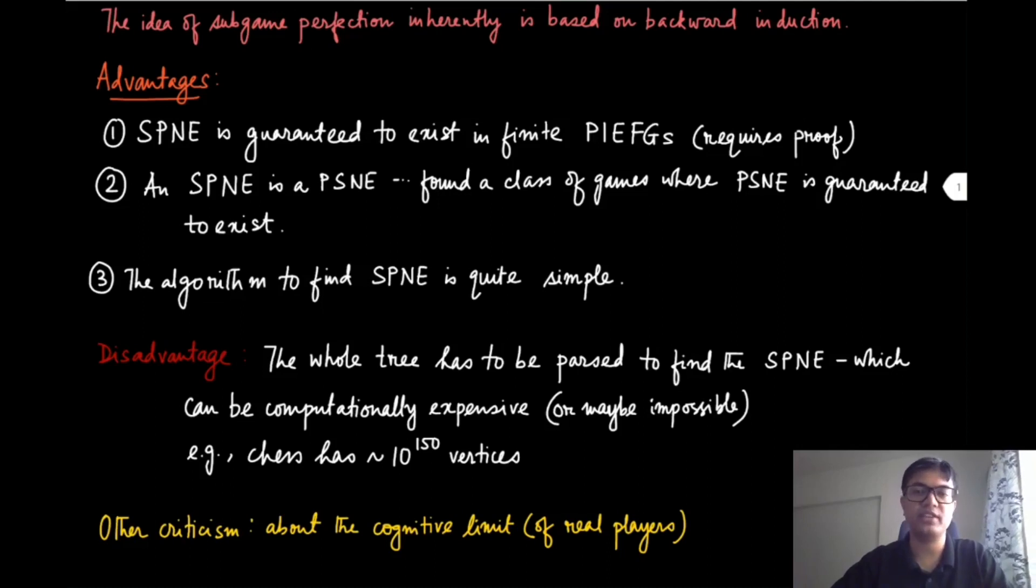The third advantage is that this algorithm of backward induction to find SPNE is very simple—it's the most intuitive thing that you can think of. But the trouble here, the disadvantage, is that to find the SPNE you will have to parse the whole tree, and for realistic games the tree can be very large.